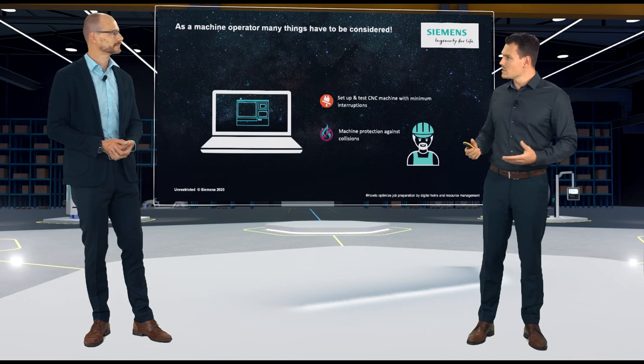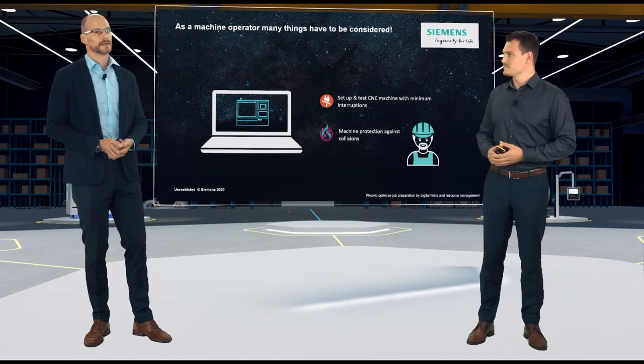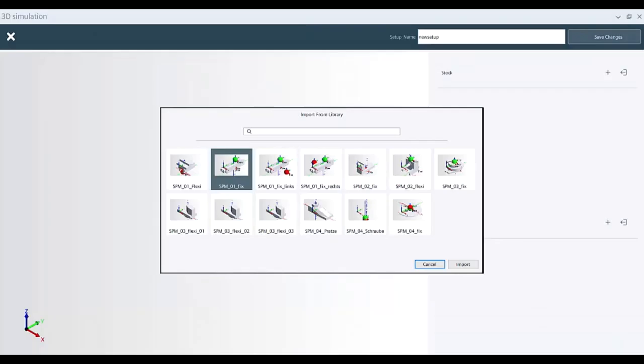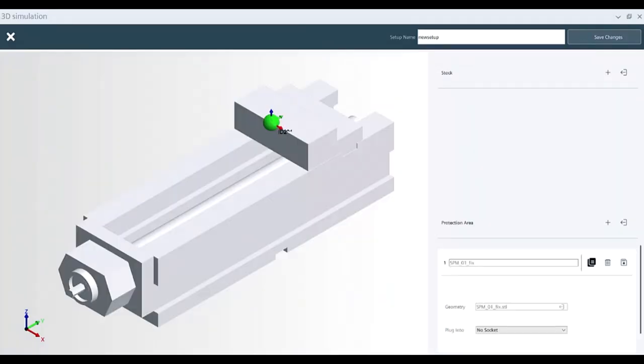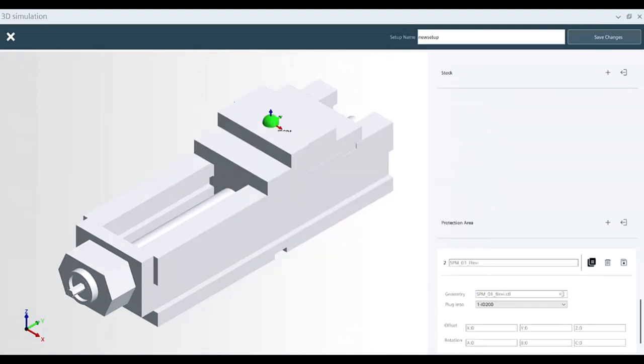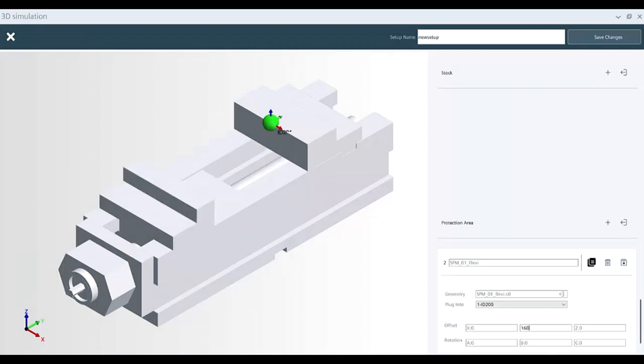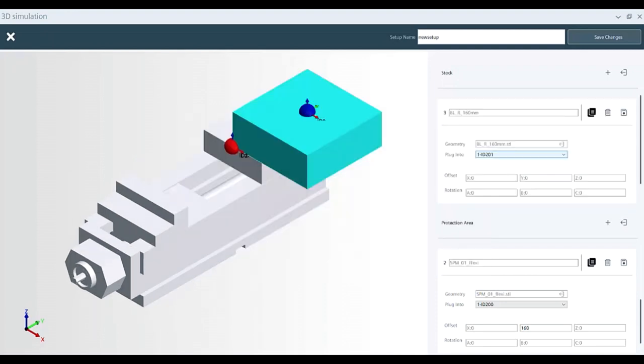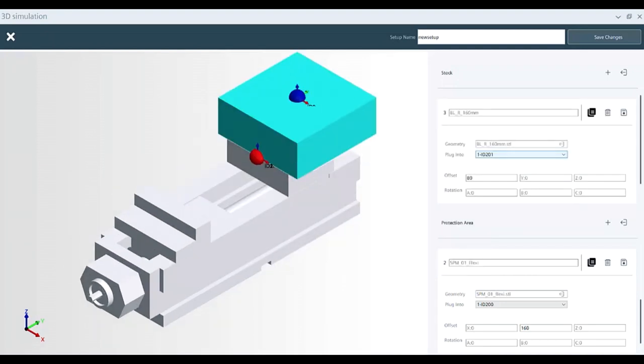Jens, do we also have a tool for that use case? Yes, just have a look. What do we need for this? First of all, you have to create a setup with a specific clamping situation. For this, you select a clamping device from an imported 3D file. Then, link this to a blank which is used for the manufacturing and place it into the correct position. After that, load it into the simulation and start your program to verify your NC program.